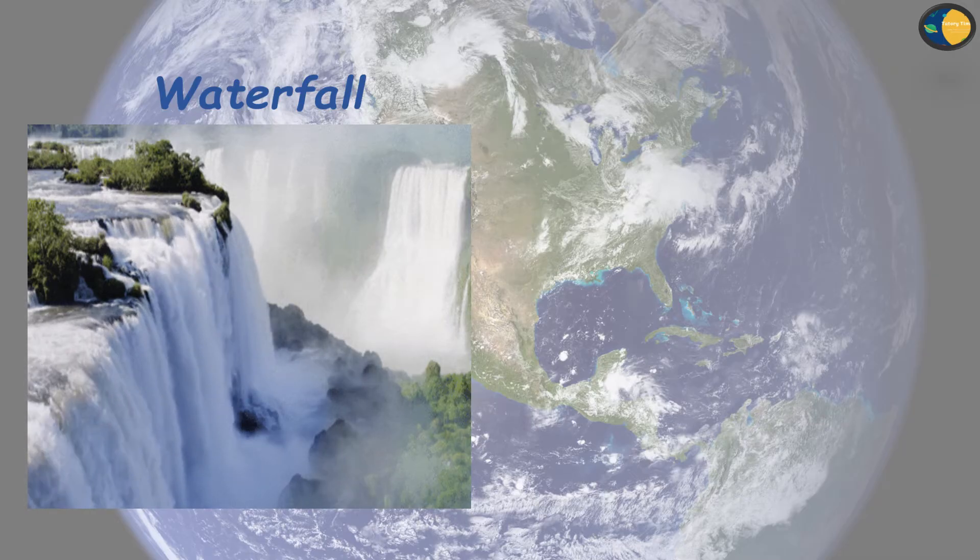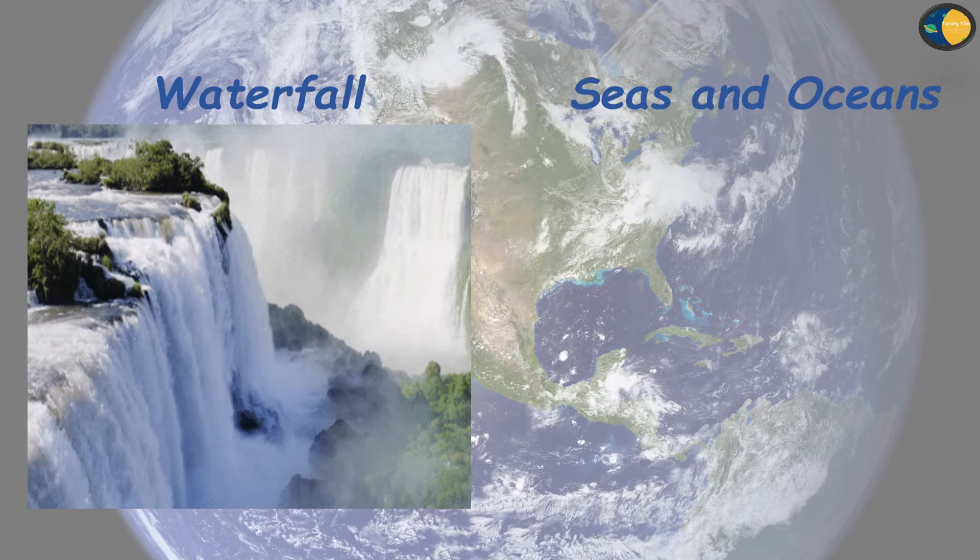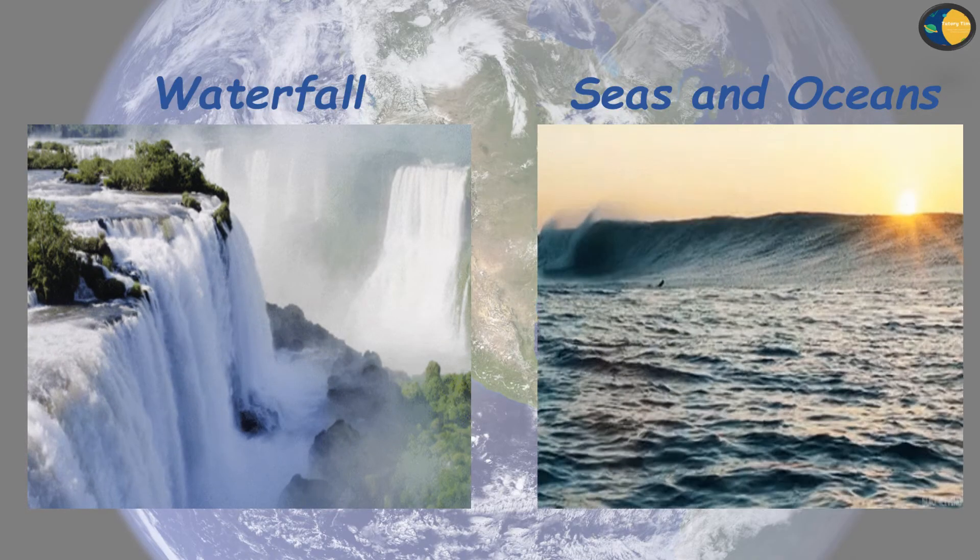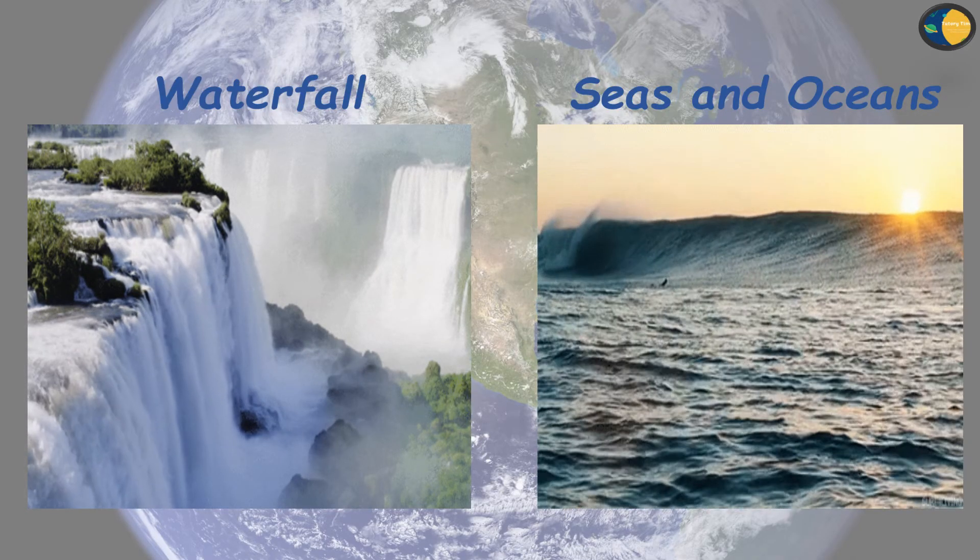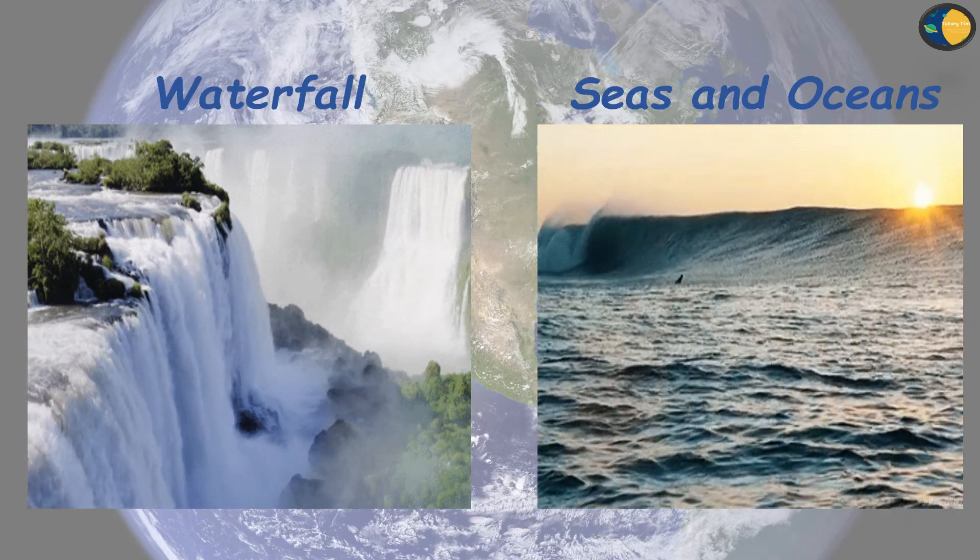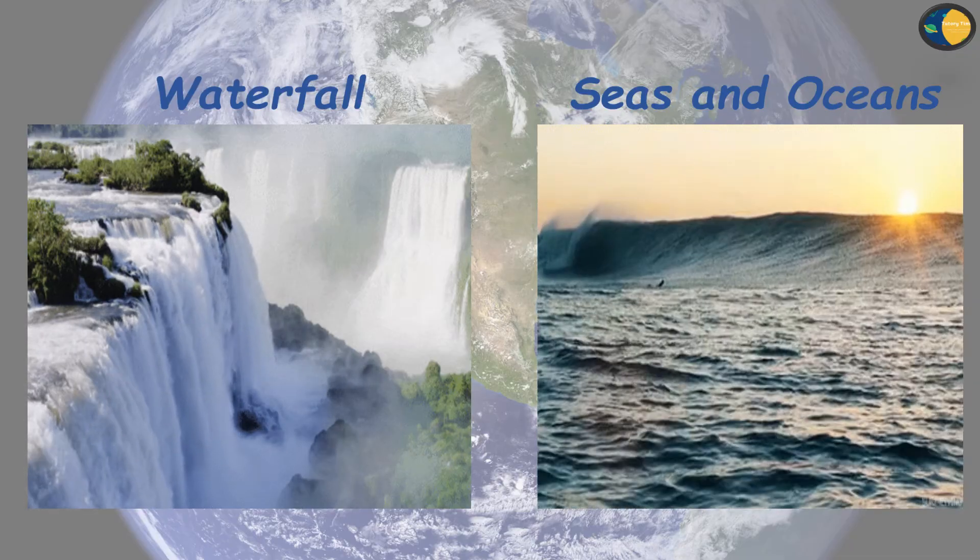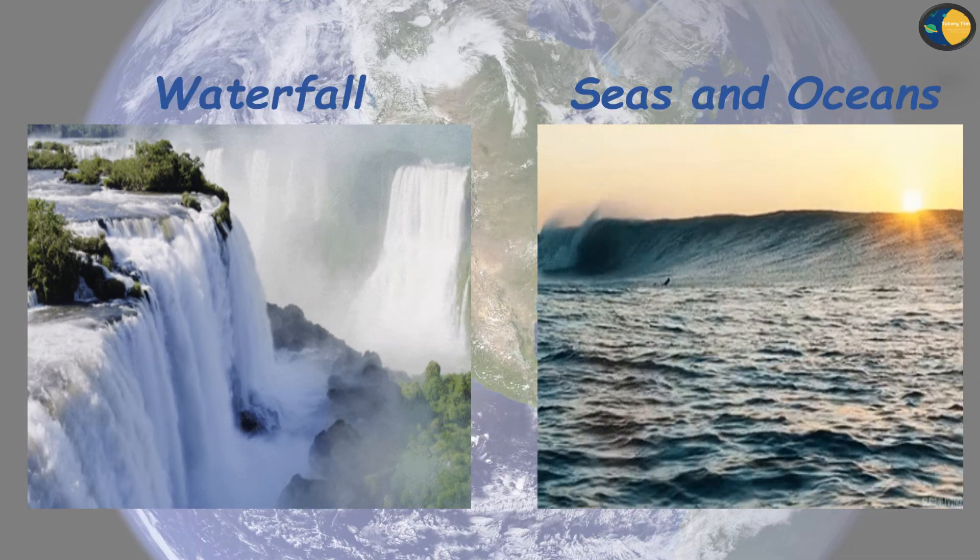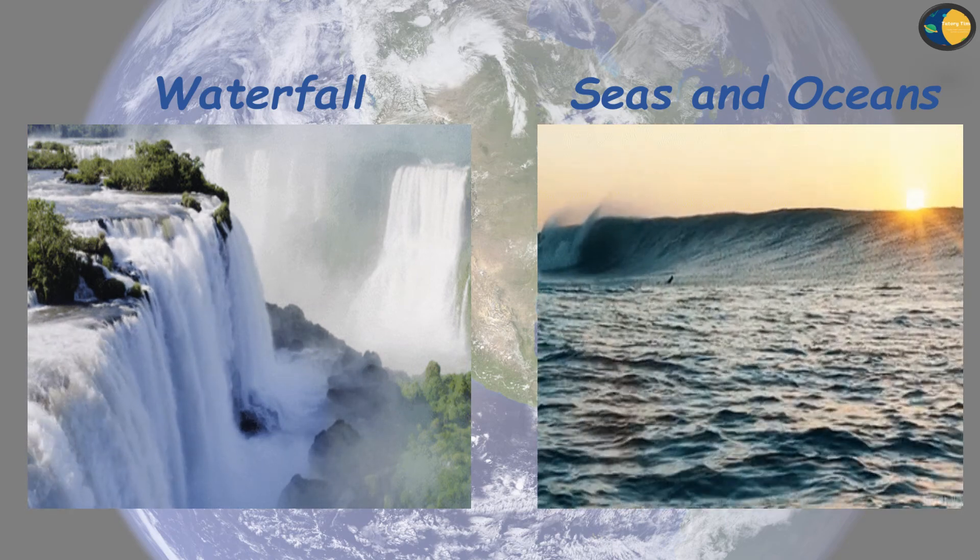Next is seas and oceans. Very large water bodies are called seas and oceans. They have salty water. And we cannot use this water for cooking or drinking. Many animals live in the seas and oceans.